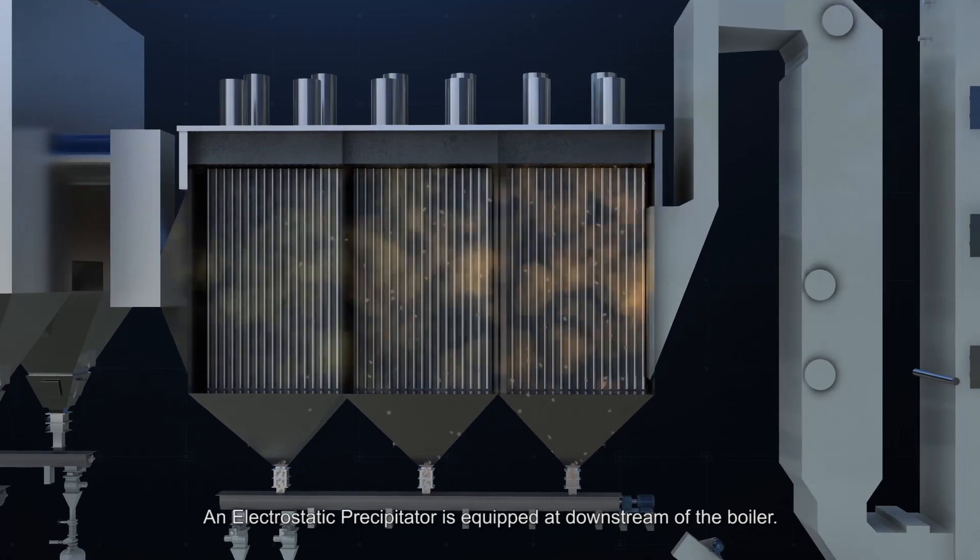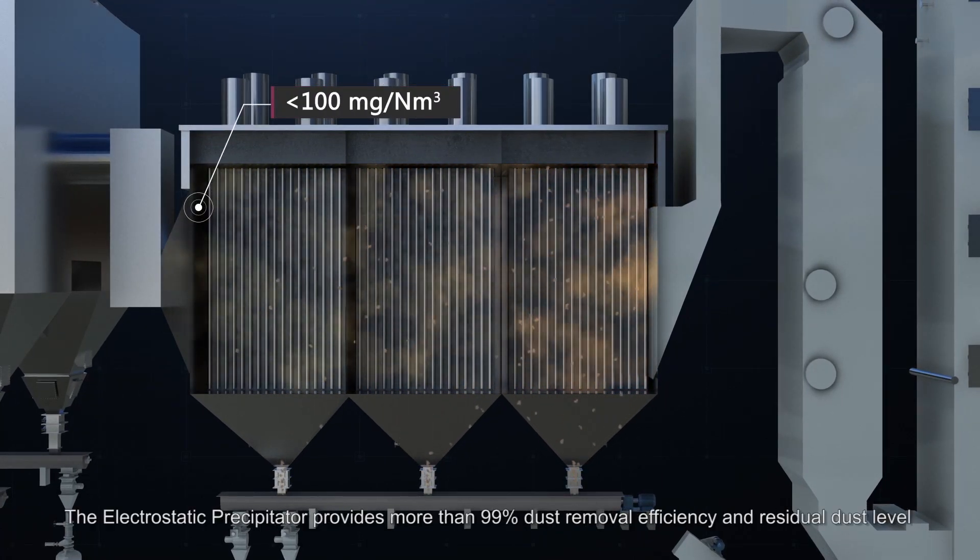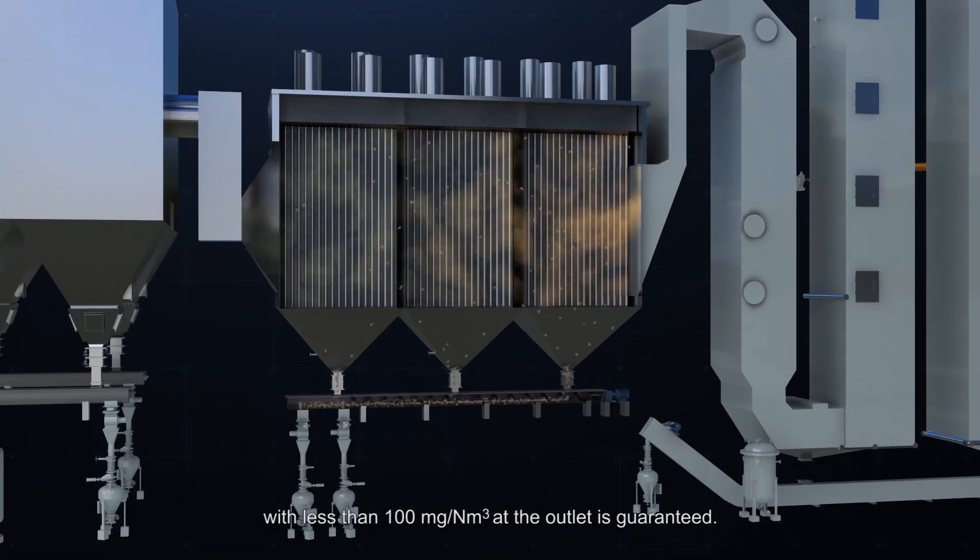An electrostatic precipitator is equipped at downstream of the boiler. The electrostatic precipitator provides more than 99% dust removal efficiency and residual dust level with less than 100 mg per normal cubic meter at the outlet is guaranteed.